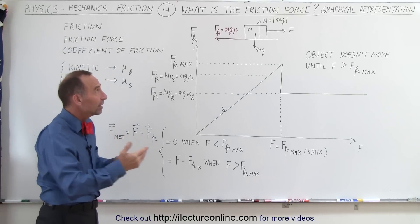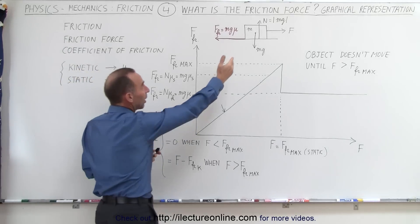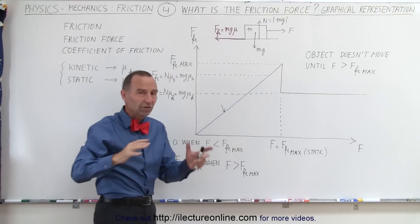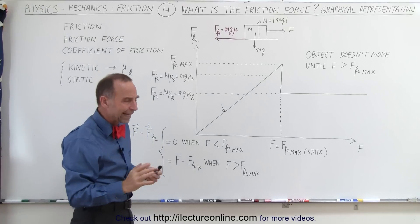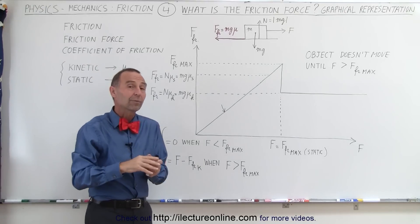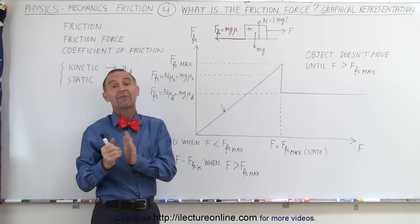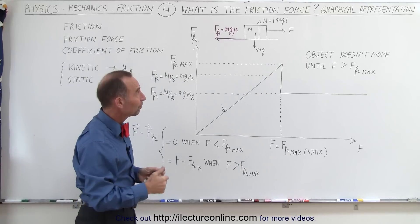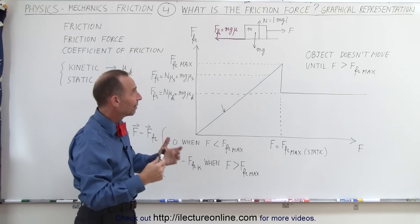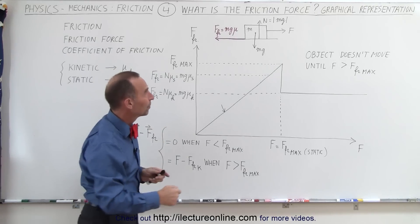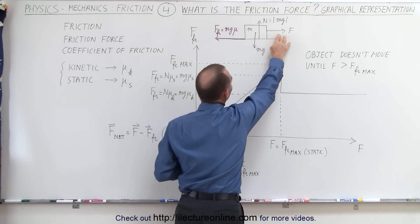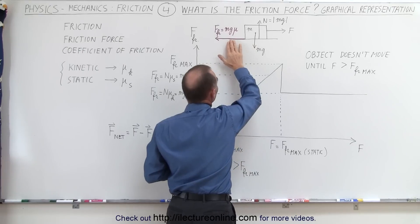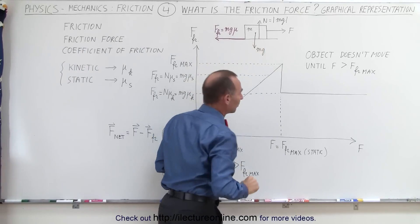Let's say we have a block sitting on a horizontal surface — all these examples initially are with horizontal surfaces. Later on we'll see some examples where we have objects on slant surfaces or wedges, but right now let's take a look at the simple examples. We pull with a force F, and then we have the reactionary force — the friction force — pulling in the opposite direction.